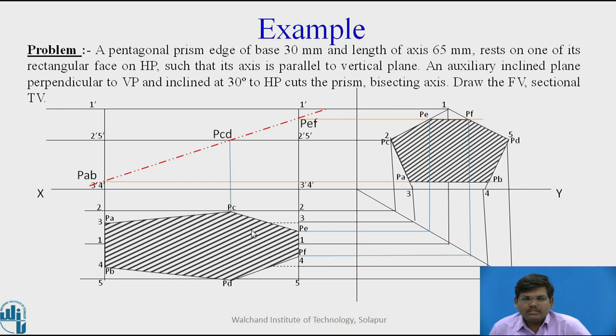This is the complete projection of the solid when it is cut by a cutting plane making an angle of 30 degrees. These are the darkened edges representing the remaining portion of the solid.